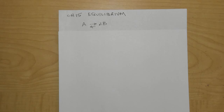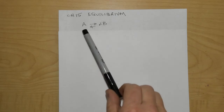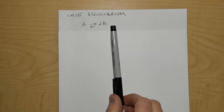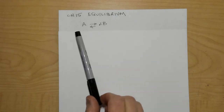Greetings, ladies and gentlemen. Thank you for joining us for Chapter 15, the first videocast. Chapter 15 is Equilibrium. In equilibrium, we find out that you've been lied to — reactions not only go from left to right, but they're also reversible, and they go from right to left.